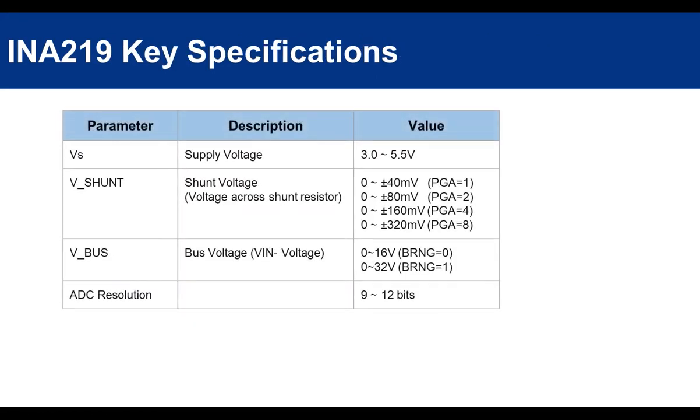Let's look at some key specifications of INA-219. First the supply voltage range is 3 to 5.5 volts, so we can connect the supply of this module directly from our 5 volt or 3.3 volt systems. V_shunt and V_bus are the two measurements acquired directly by this module, and we will find out later how these measurements are taken and how this IC calculates the current and power based on these measurements.